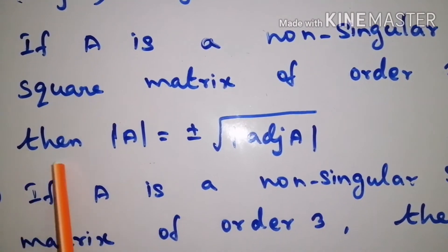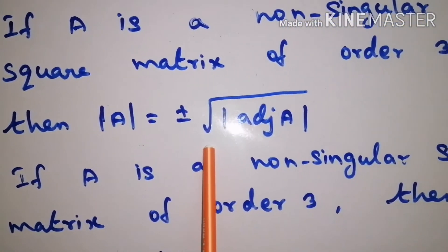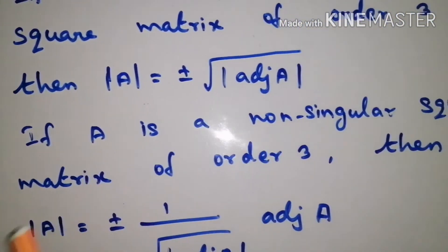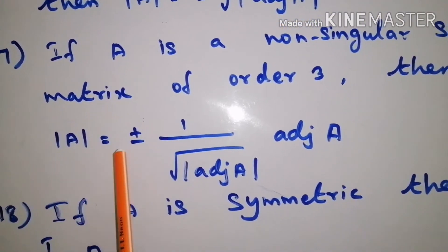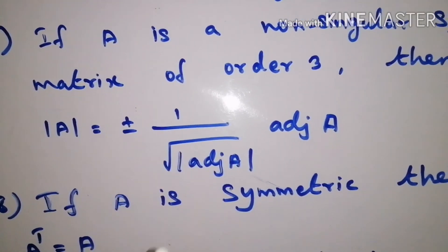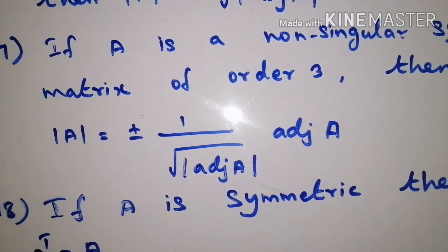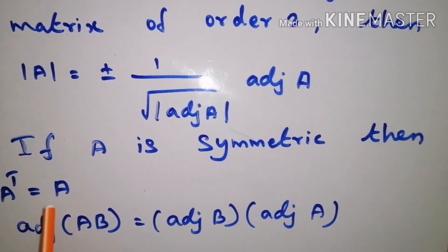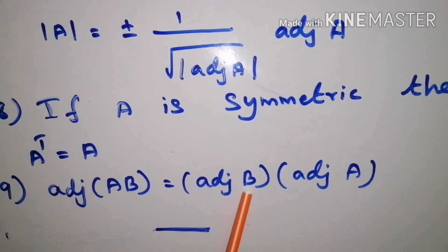If A is a non-singular square matrix of order 3, then determinant of A is equal to plus or minus square root of determinant of adjoint A. If A is a non-singular square matrix of order 3, then determinant of A is equal to plus or minus 1 by square root of determinant of adjoint of A into adjoint of A. If A is symmetric, then A transpose equal to A. Adjoint of AB is equal to adjoint of B into adjoint of A.